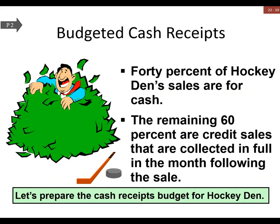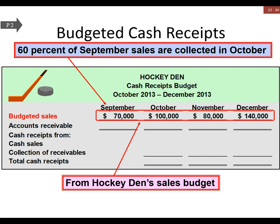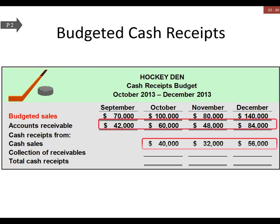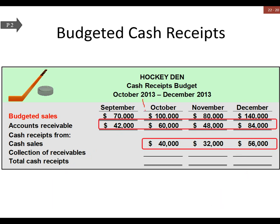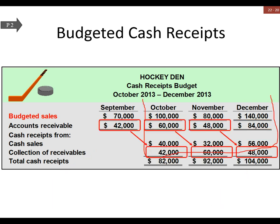Our cash budget is based on our assumptions of when we're going to get the cash in the door. October through December is what we're trying to figure out. September's rolls forward to October — this is our accounts receivable that we're going to actually collect in cash.